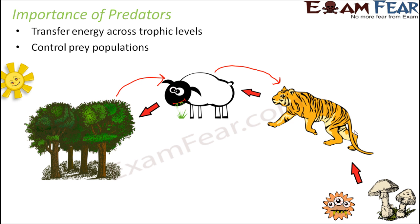Similarly, when these organisms die, they are eaten up by decomposers like bacteria and fungi. So due to the eating of one organism by another, energy gets transferred across trophic levels. That is one advantage.